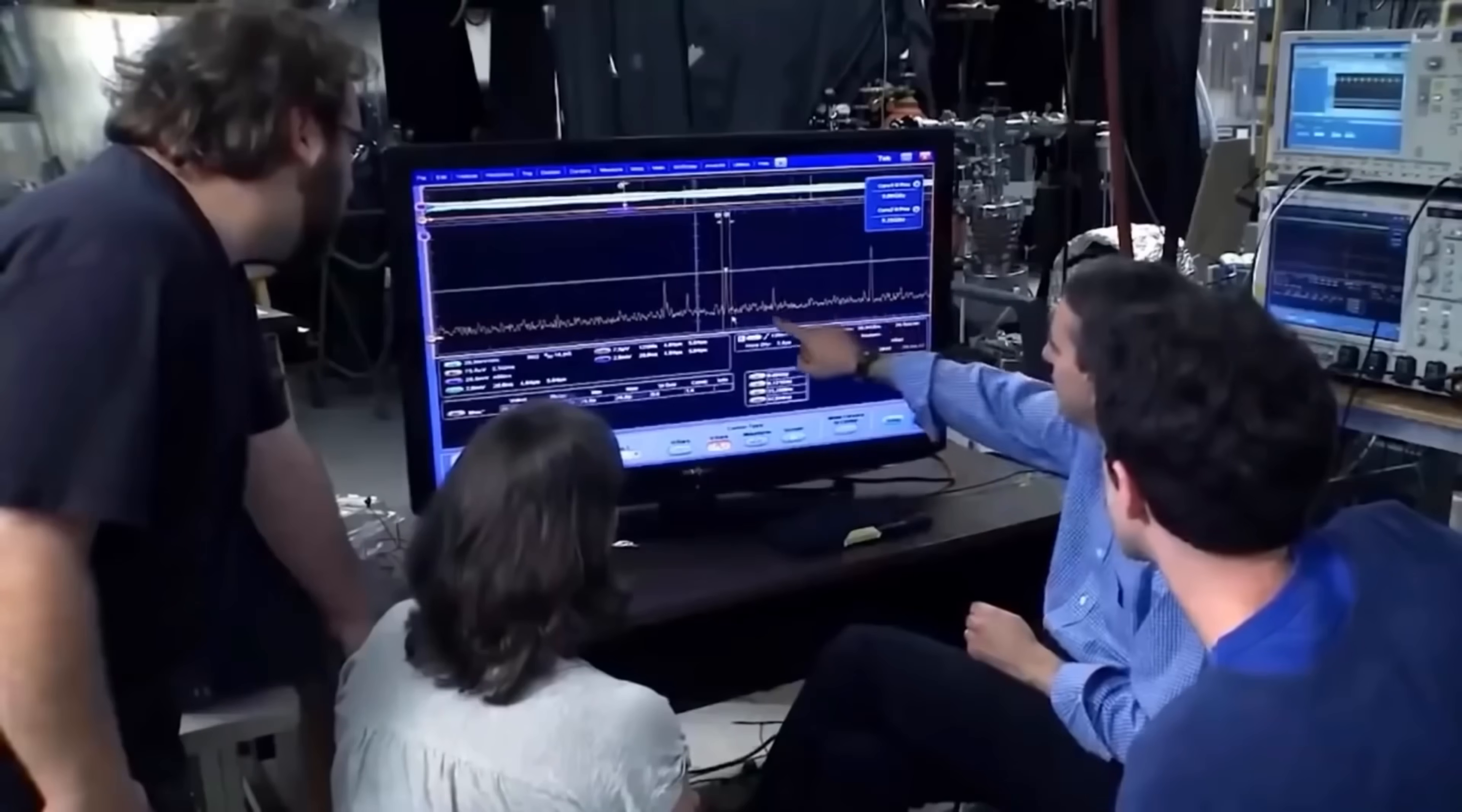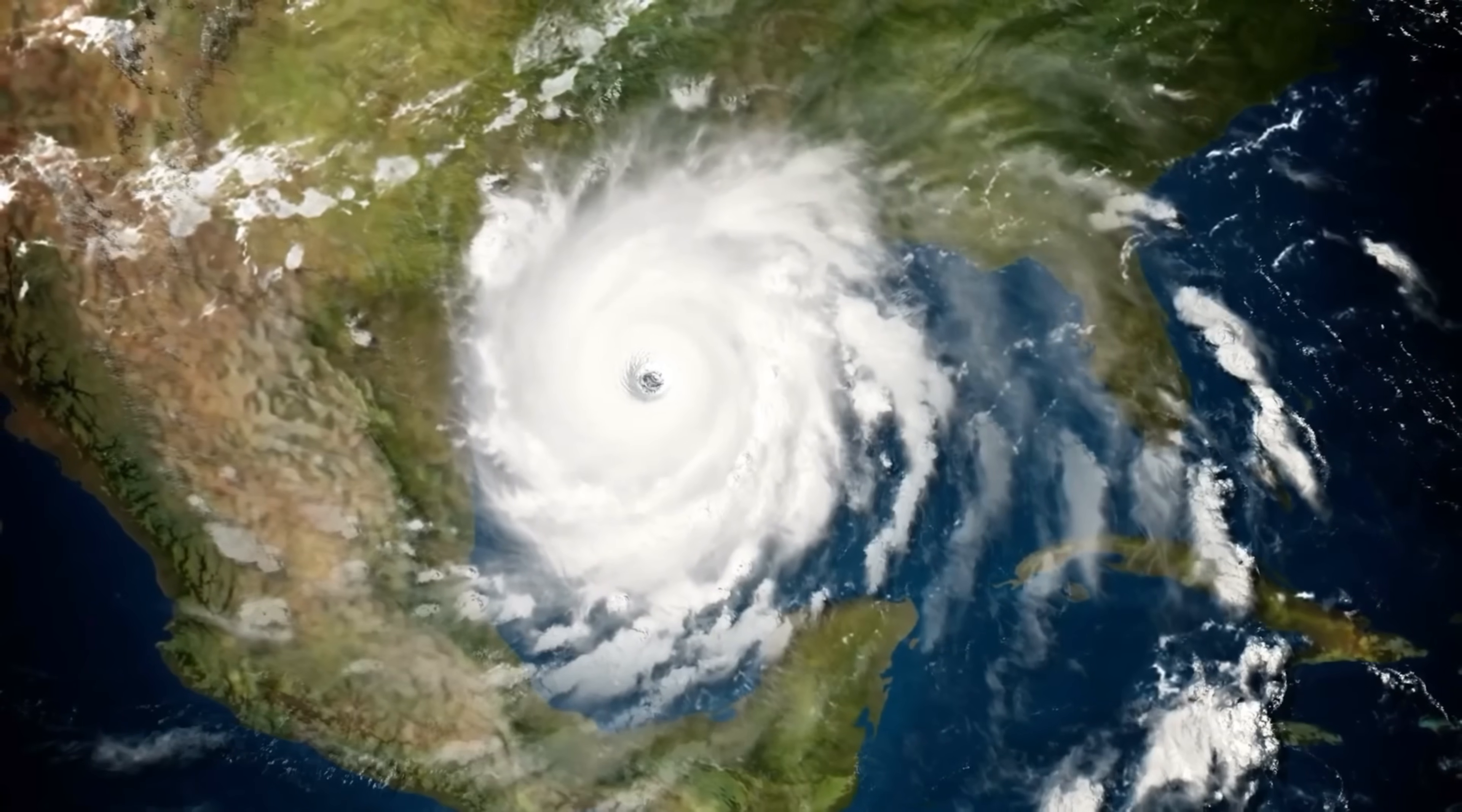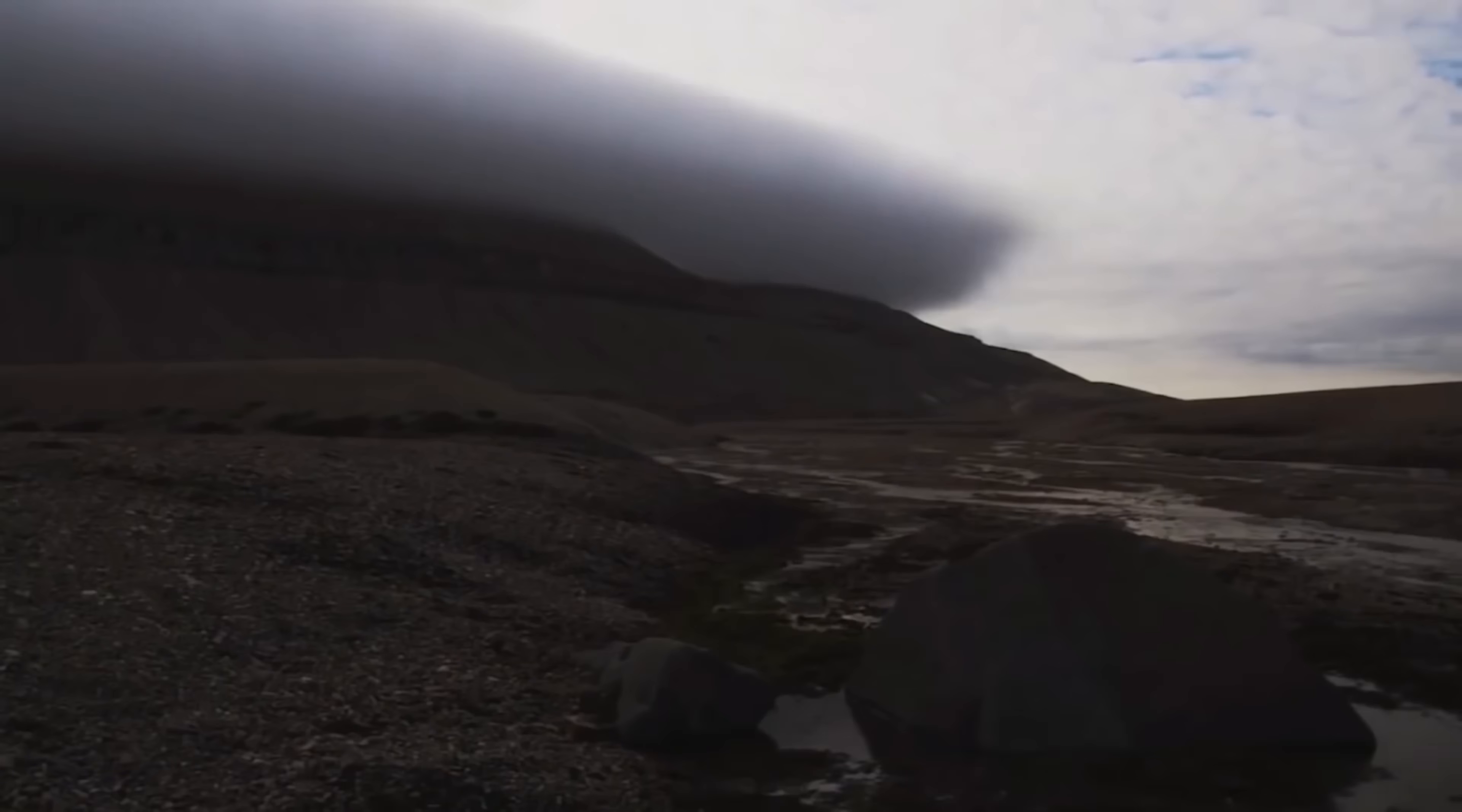But what is most remarkable is the confirmed presence of water vapor in the atmosphere of an exoplanet. Two independent teams of scientists came to this conclusion at once. The internet instantly exploded with news about the existence of a habitable planet. But this is not entirely true.